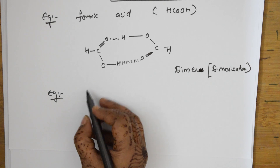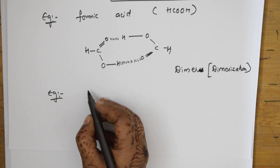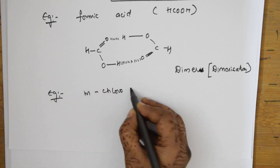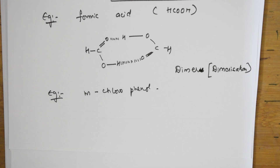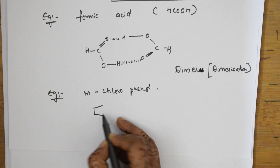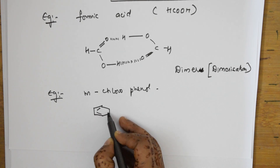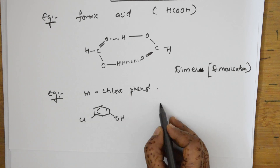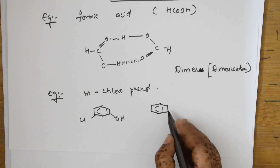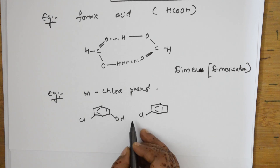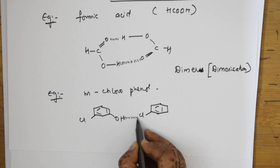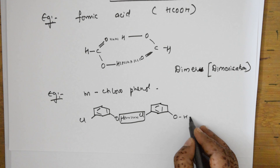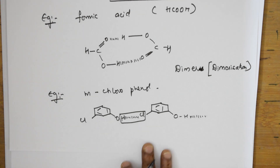Let us take one more example: metachlorophenol. Draw the benzene ring; chlorine is at the meta position, and there is an O-H group. Now draw another molecule of metachlorophenol also with chlorine at the meta position. There is a hydrogen bond formed between the hydrogen atom and the electronegative oxygen atom, and this continues between the molecules.